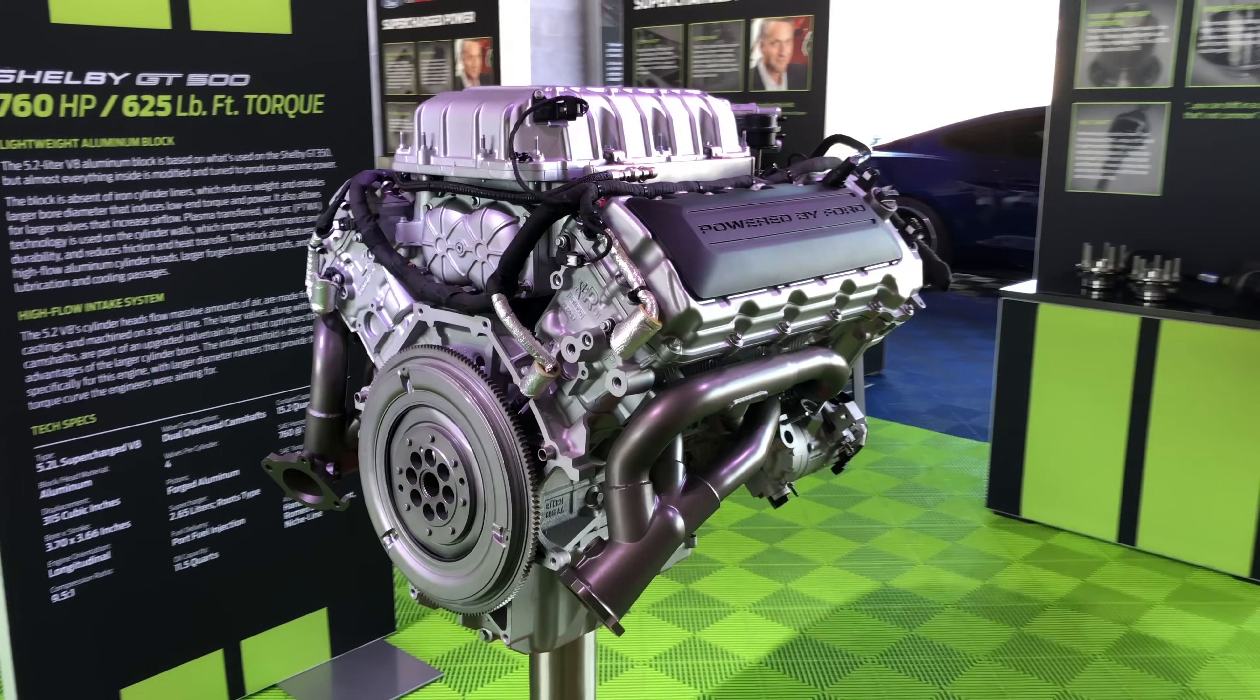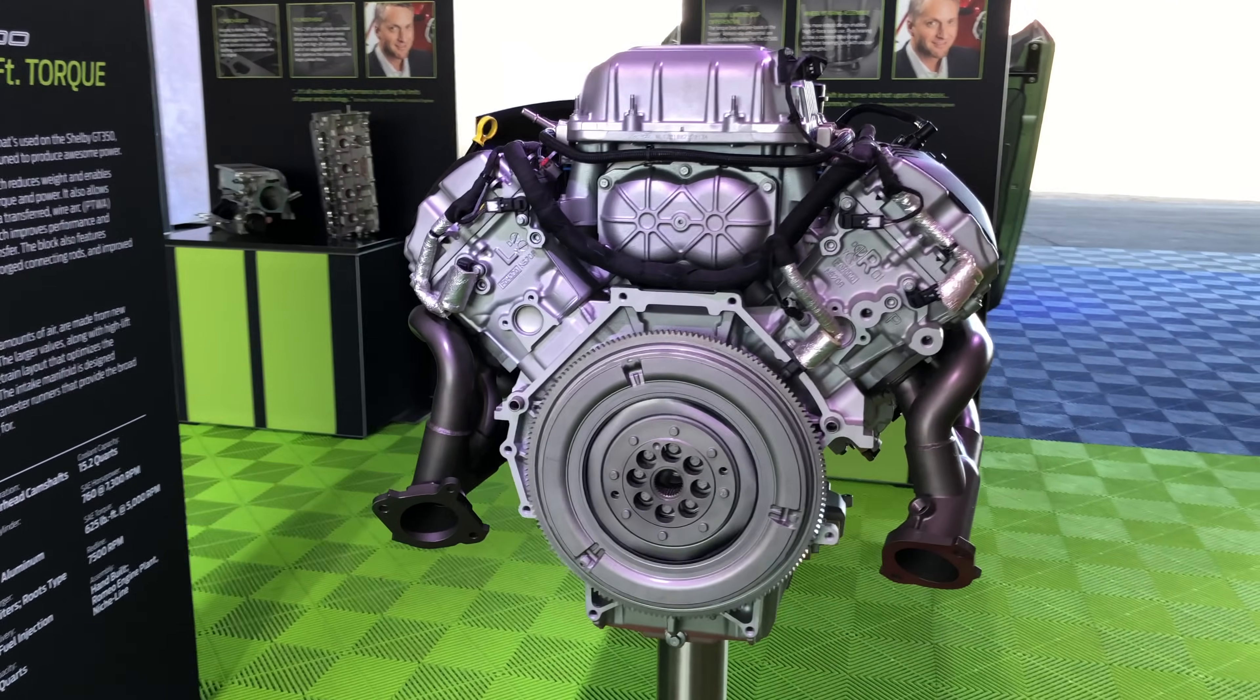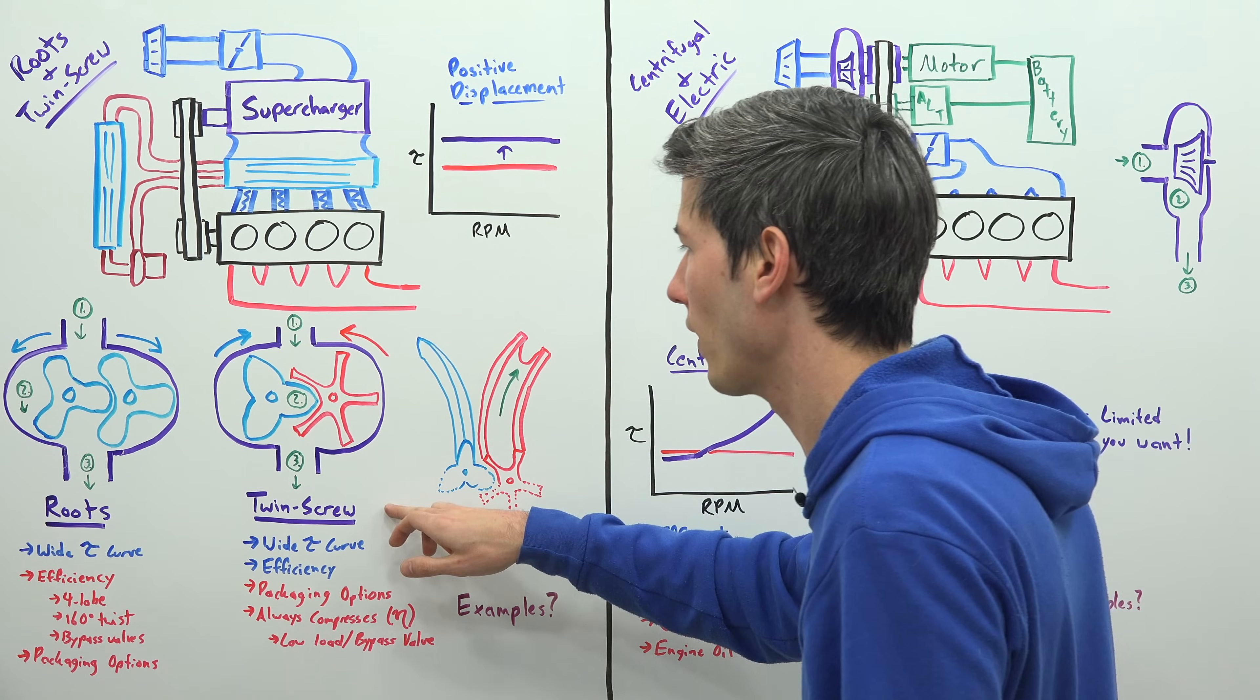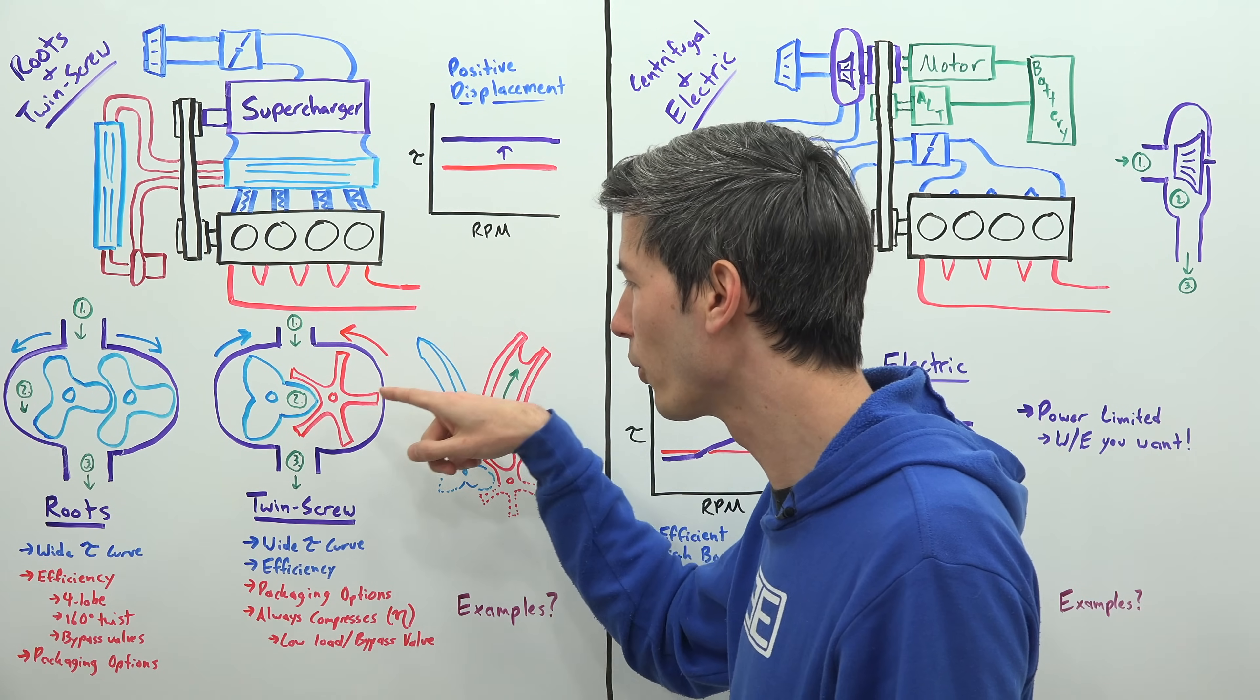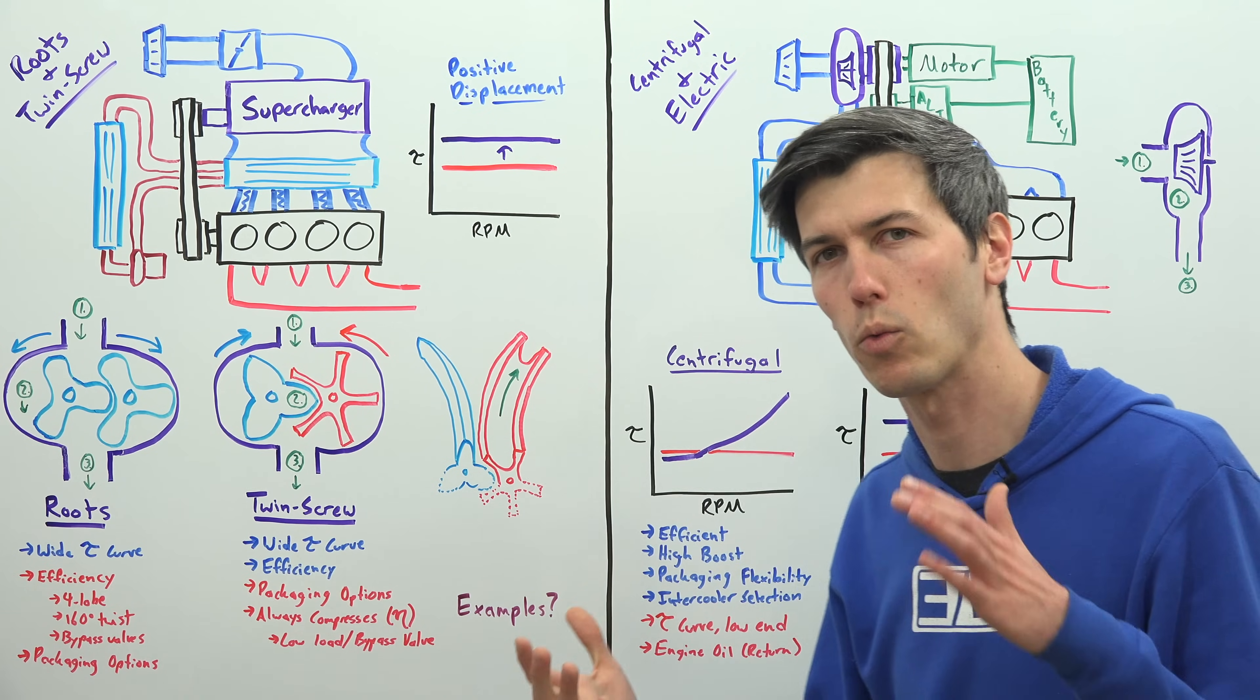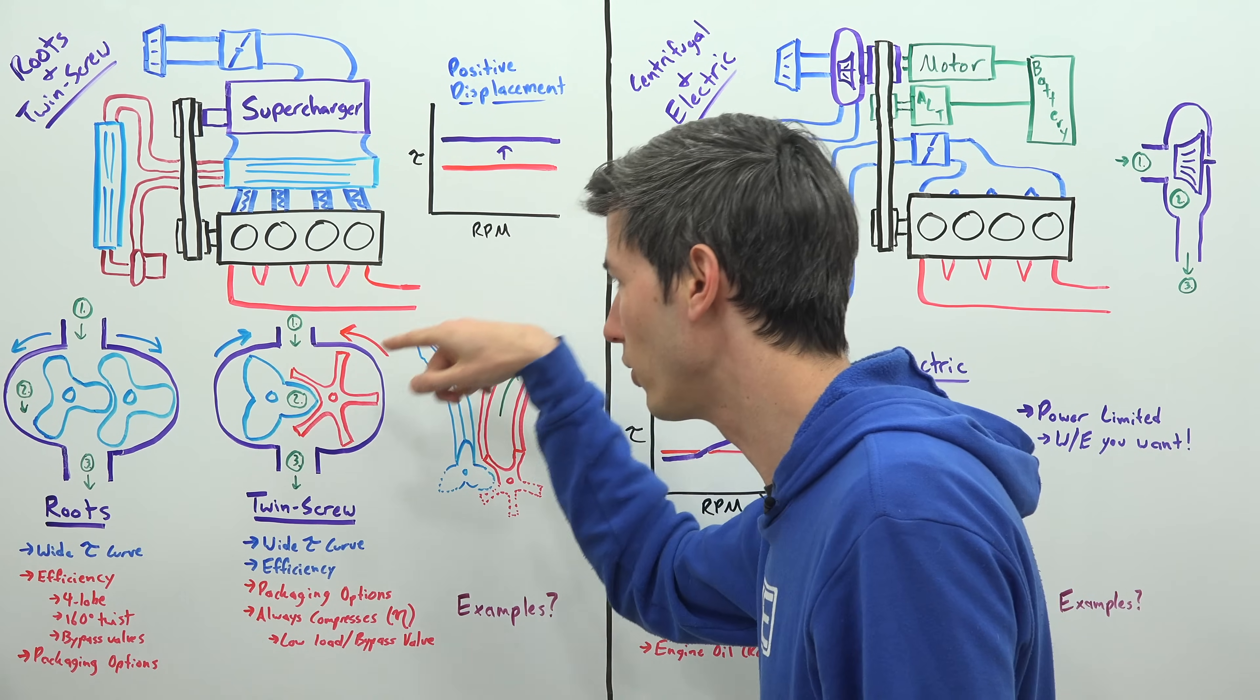Downside really to both of them being packaging - the location of where they must go and the overall size of them, they're pretty large, pretty hefty. And then for these twin screw style superchargers if there's not a bypass valve, well then it's always going to be compressing air. Any air that travels through this twin screw supercharger is going to be compressed. And so no matter what, as you compress air it heats up.